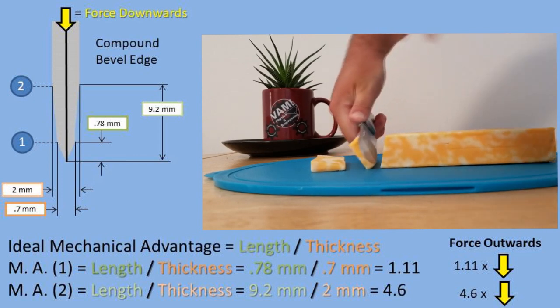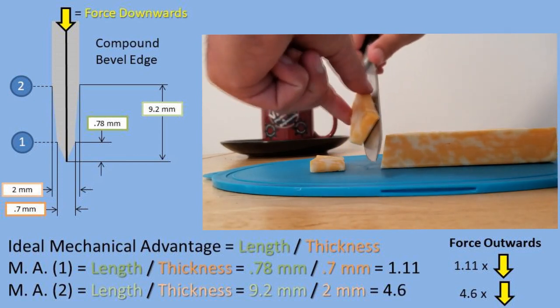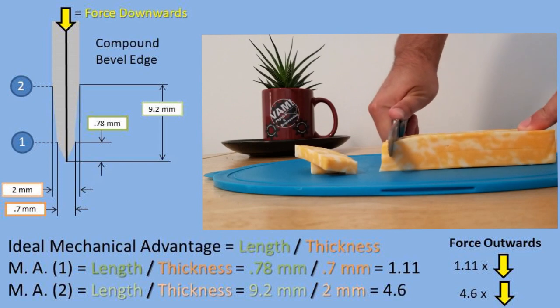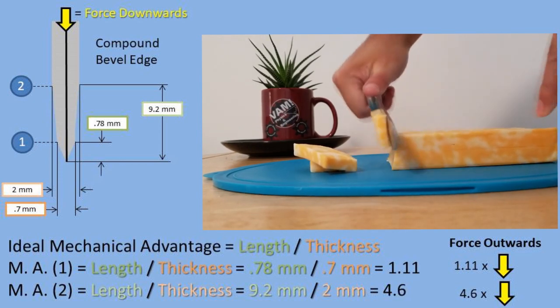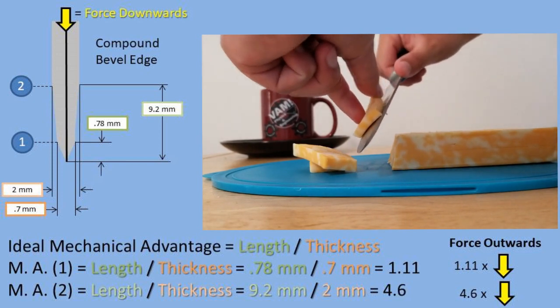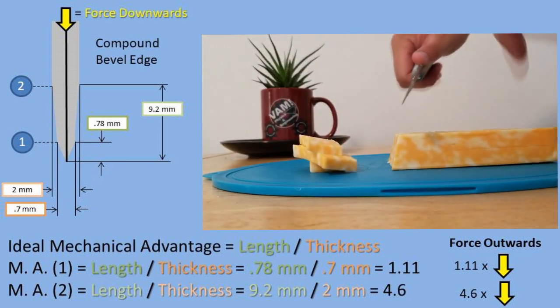So at point 1, there is less of a mechanical advantage, but the block of cheese is moving apart faster. And at point 2, there is more mechanical advantage, but the block of cheese is moving apart slower. More displacement, less force. Less displacement, more force.